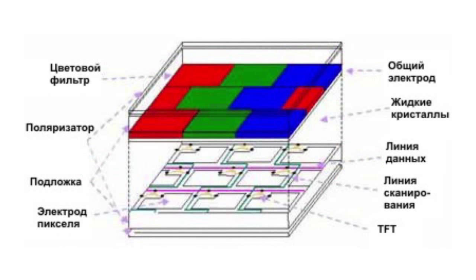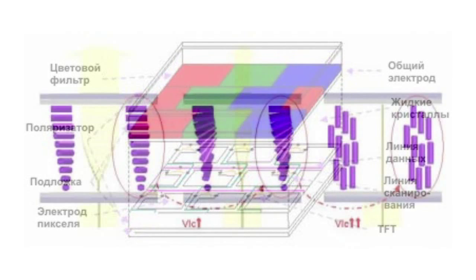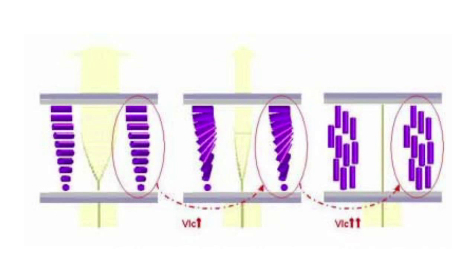The basis of the TFT LCD structure is represented by liquid crystals, two polarizers and glass plates — the upper color filter base and the lower TFT array base. Liquid crystal material is injected between the two glass plates. By controlling the value of the input voltage applied to liquid crystals, we can change the arrangement of the molecules, their orientation and direction, which will lead to an appropriate change of the light flux passing through the liquid crystals.